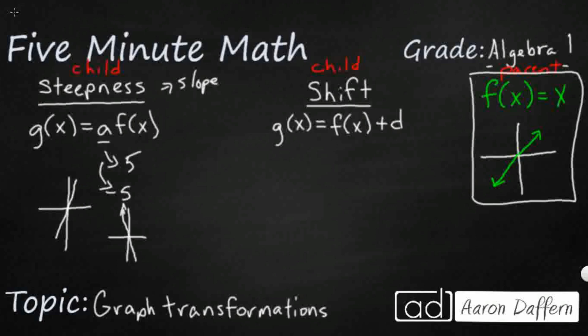So as you start messing with the child function here, what you're going to notice is if you have a multiplier right there on the outside of the f of x, you're messing with the steepness, or you're adjusting the steepness of the slope.